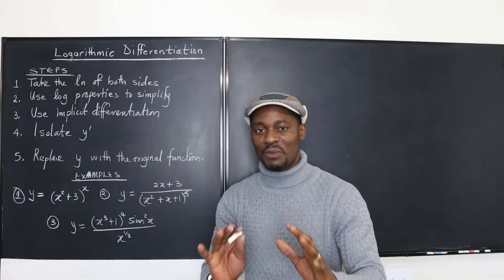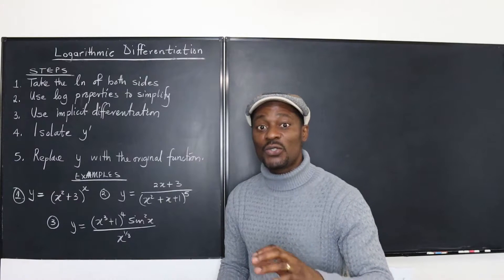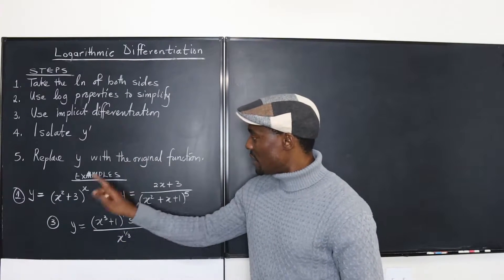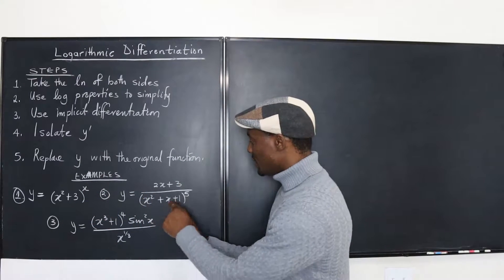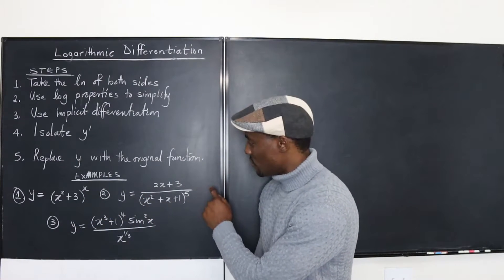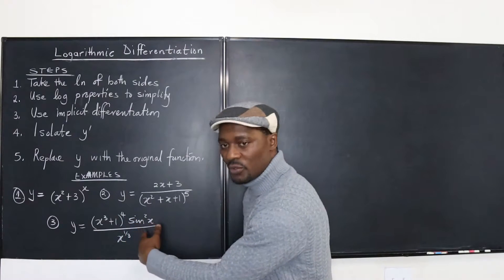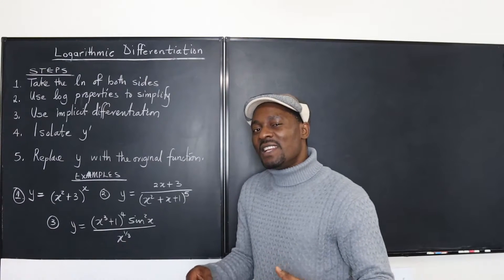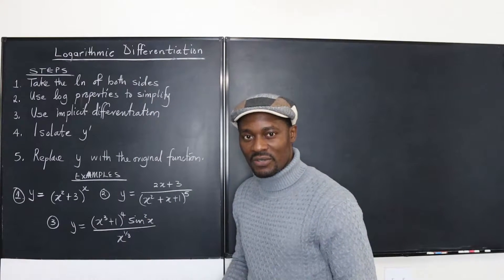Let me just make things clear from the beginning. There are some differentiations you cannot do without logarithmic differentiation — and this is an example. Now you can differentiate this using quotient rule, you can use quotient rule here too, quotient plus product rule, and you get your answer. Well, it might not be as easy as if you use logarithmic differentiation.